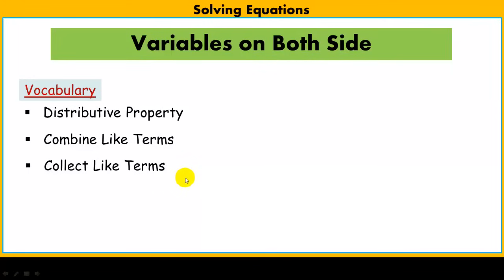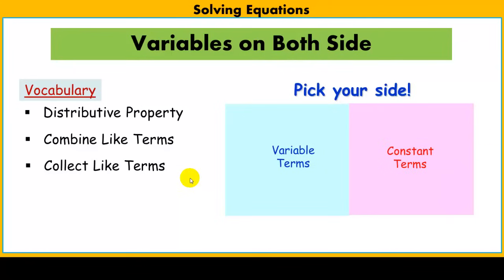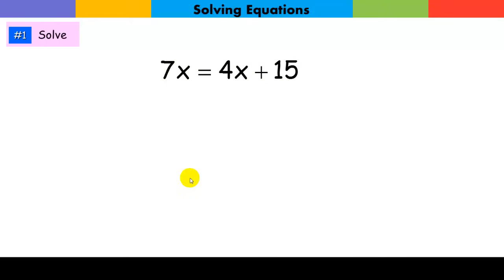Today's lesson is essentially picking sides. On an equation, you just need to pick one side or the other. One side you're going to collect all your variable terms, and the other side you'll collect your constants. Once you get them all on one side or the other, you're really ready to solve the equation and get the variable alone. Let's do some example problems.